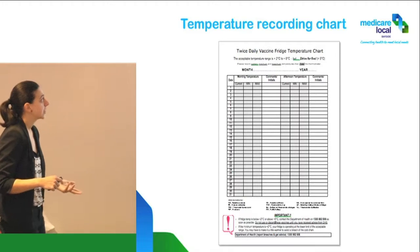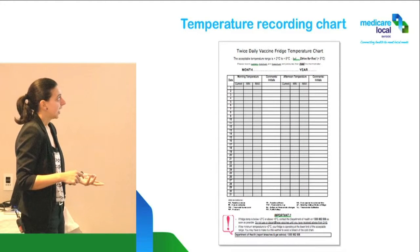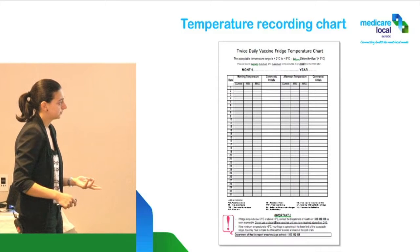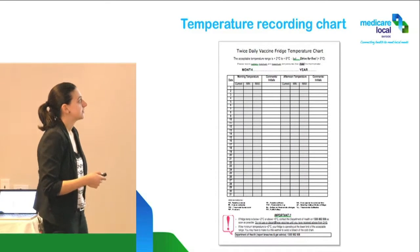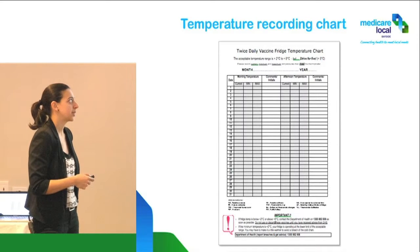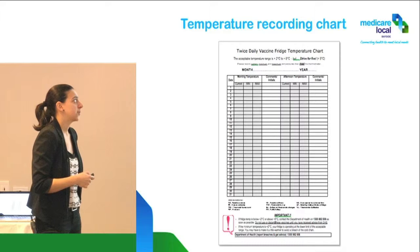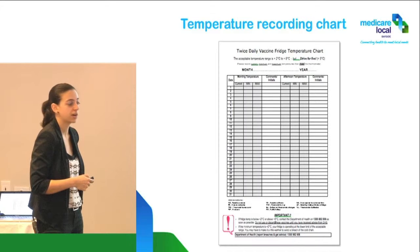The way it works: you can see it's got month, year, and then the date — all the numbers are already in there. You don't need to know if it's a Monday, Tuesday, or whatever. So for instance, if it's January, we just put January 2013, and then from the 1st of Jan we start recording current, minimum, maximum, and put initials or any comments if we did any restocking.